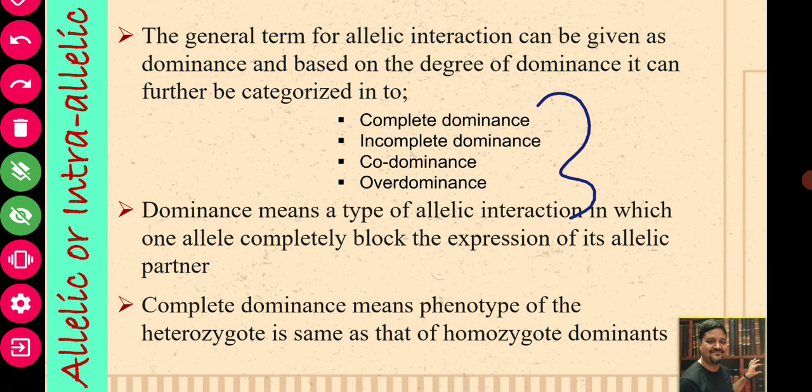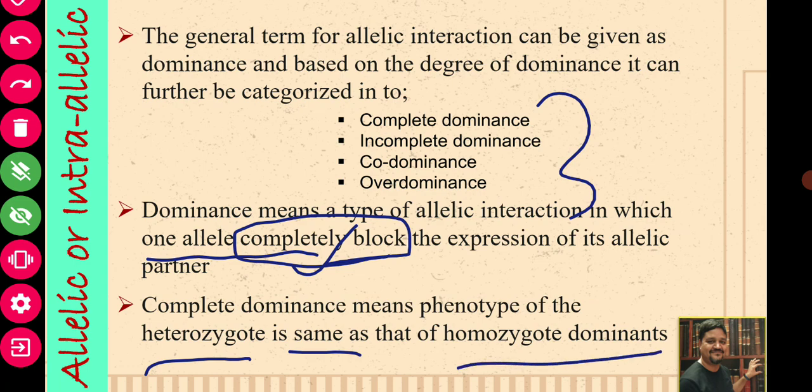The four categories are: complete dominance, incomplete dominance, co-dominance, and over-dominance. These four categories are examples of intra-allelic interaction. Dominance means a type of allelic interaction in which one allele completely blocks the expression of its allelic partner. Complete dominance means the phenotype of the heterozygote is the same as that of the homozygote — both the homozygote and heterozygote animals will have the same kind of phenotype.